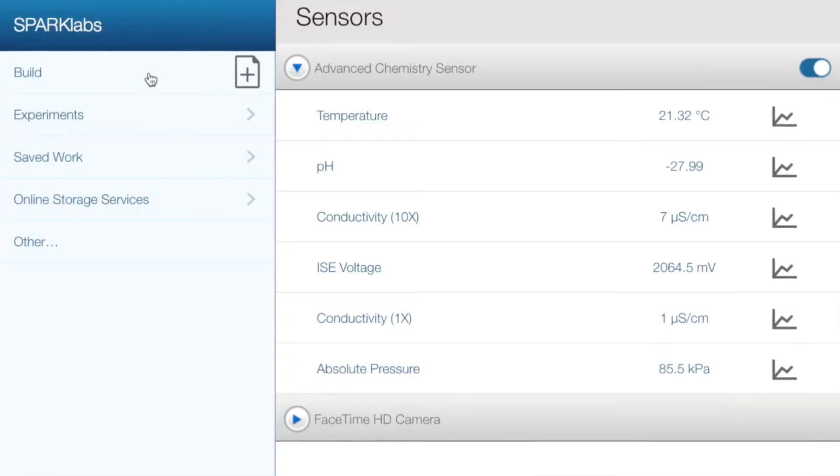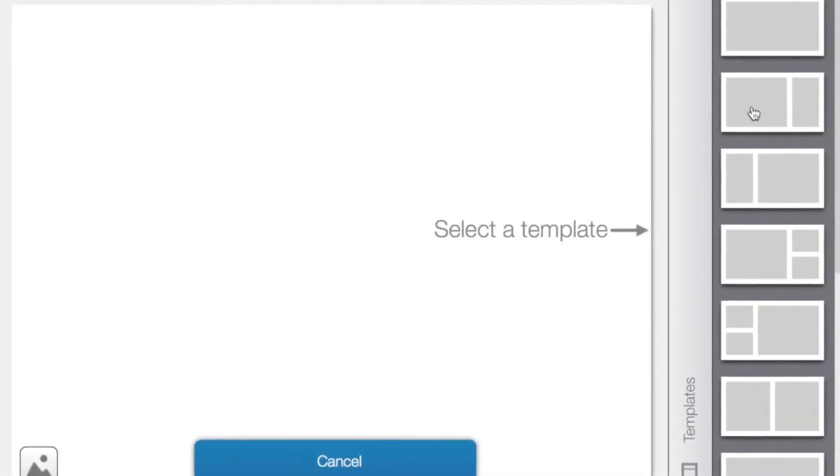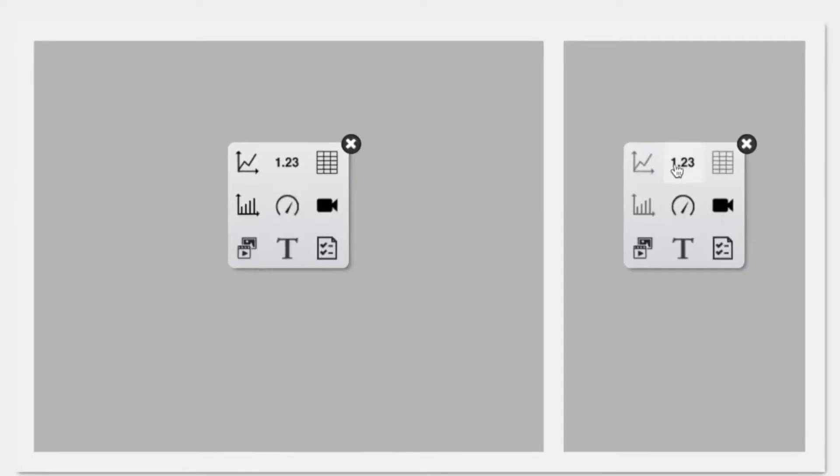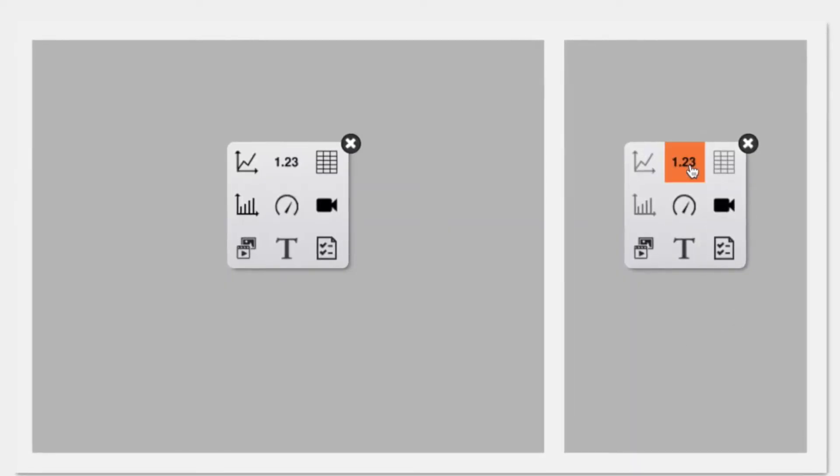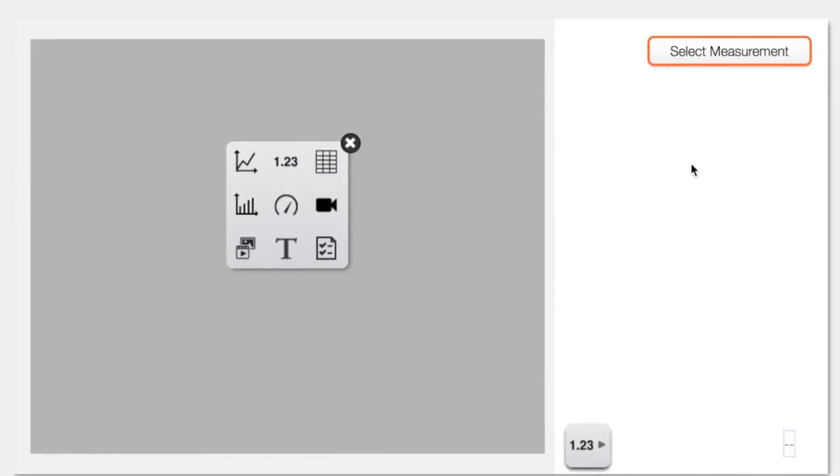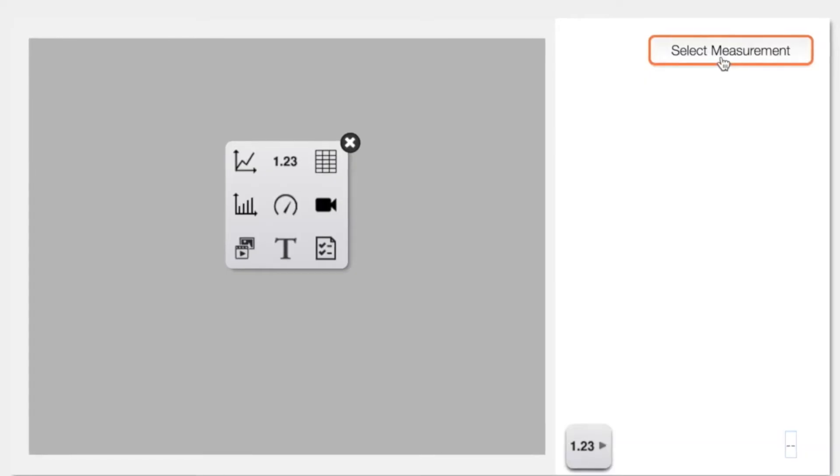Click on build and choose the second template. In the smaller gray box you're going to choose 1.23. That's our meter function and then you're going to select the temperature measurement for that box.